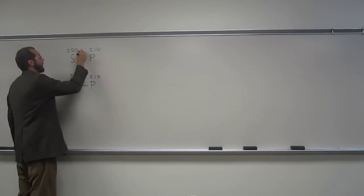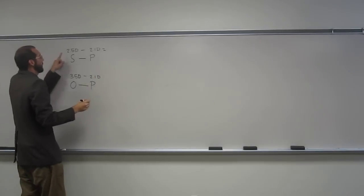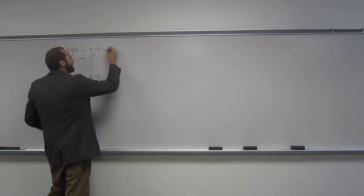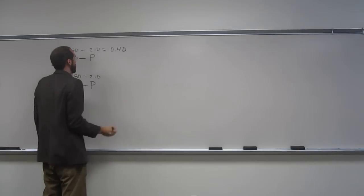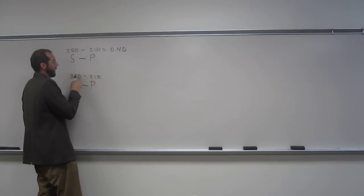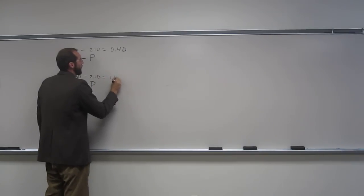So how do I figure this out? I say minus, minus, so 2.5 minus 2.1 is 0.4 Debye, and this is 3.5 minus 2.1, so that's 1.4 Debye.